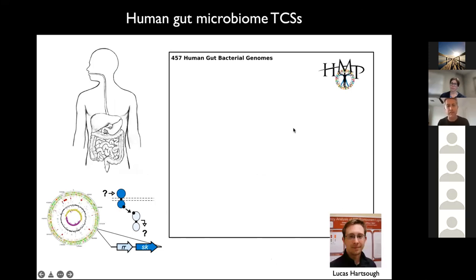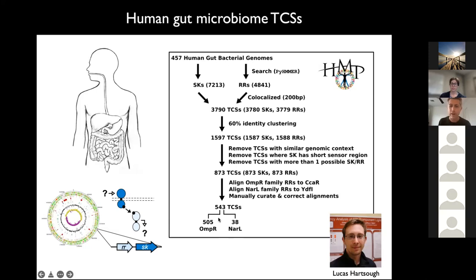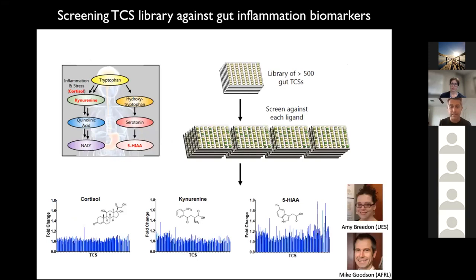We're scaling this approach up. We went into human microbiome genomes from human gut bacteria, classified the two-component systems, and found ones we could rewire using our method. We've got a library of about 550 totally uncharacterized two-component systems, commercially synthesized the pathway genes, and are now doing screens against ligands of interest from the gut environment — stress-linked ligands and those associated with inflammation, injury, and other conditions.